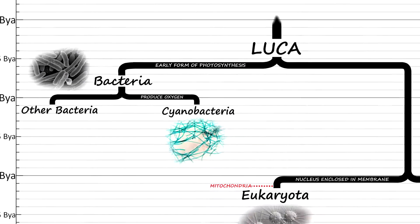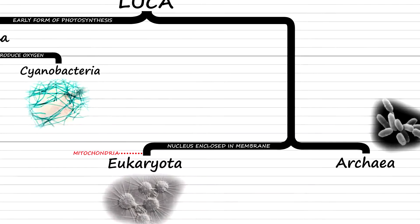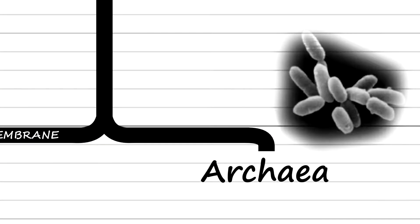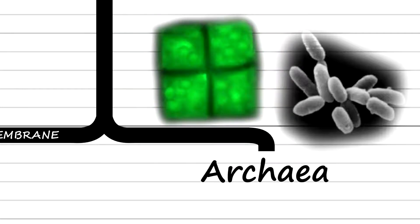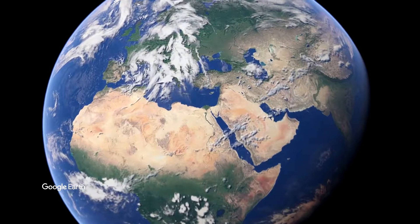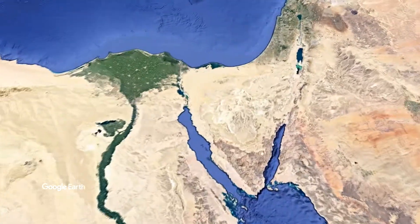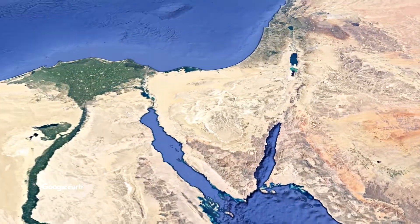Archaea and bacteria are generally similar in size and shape, although a few archaea have quite unique shapes not seen in bacteria, such as the flat and squared shaped cells of Haloquadratum Wolsbyi, which was discovered in a brine pool in the Sinai peninsula of Egypt.